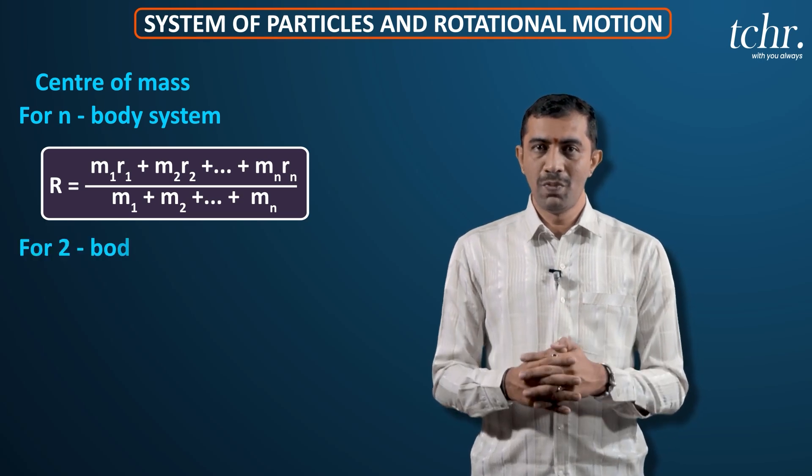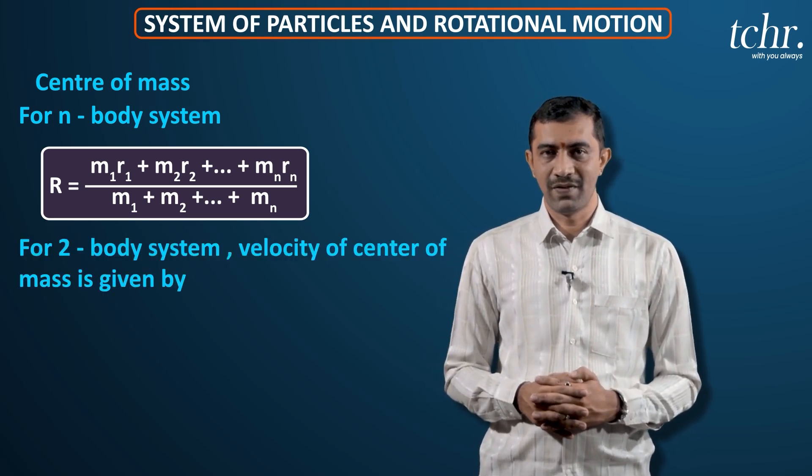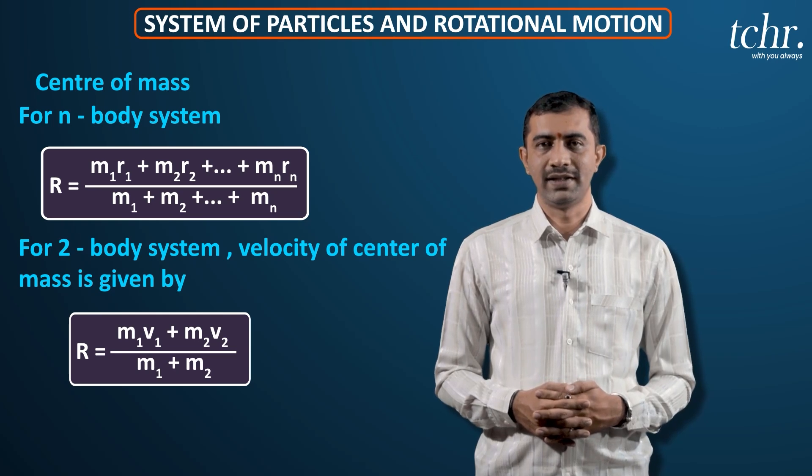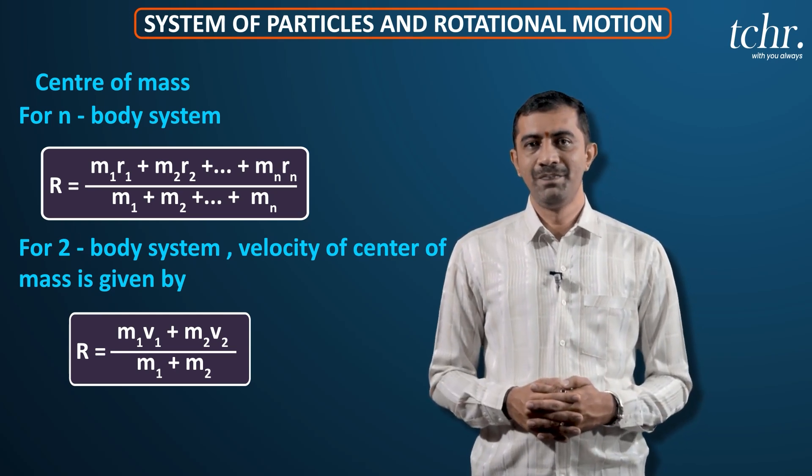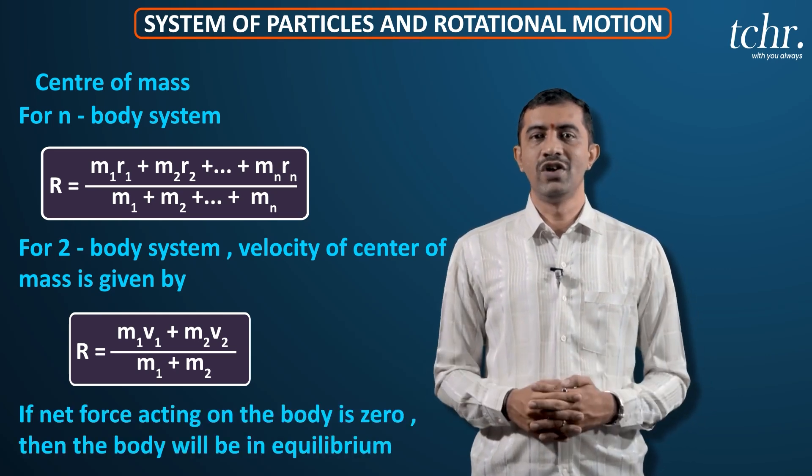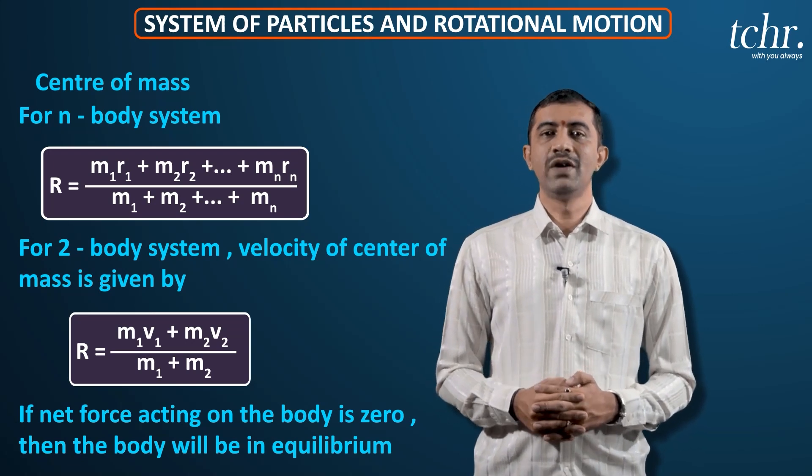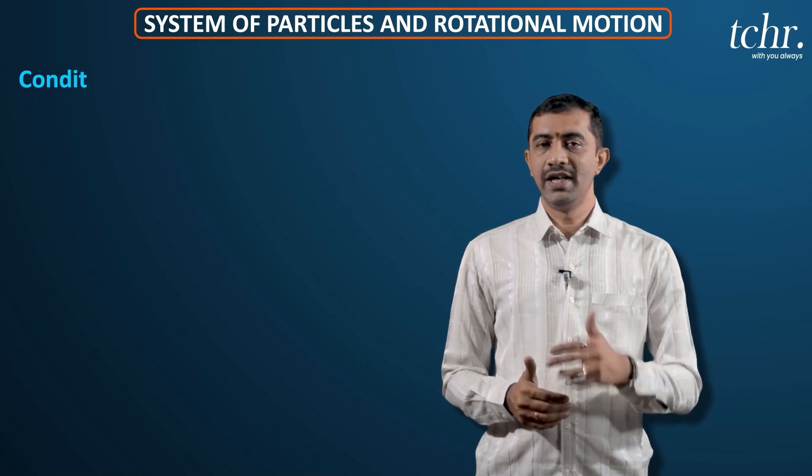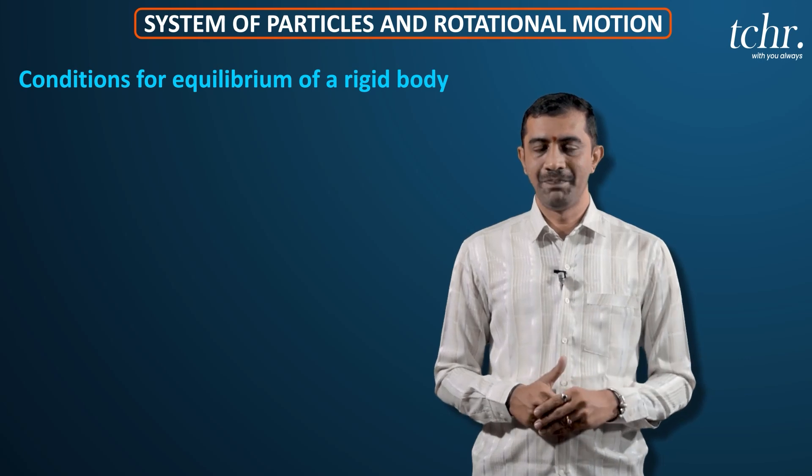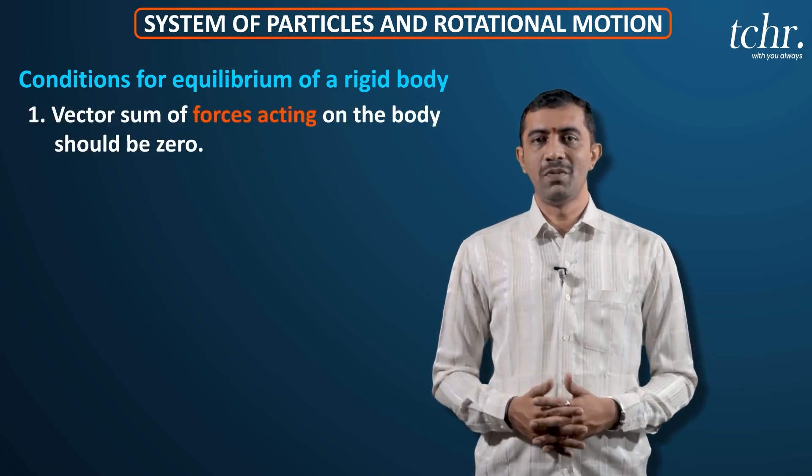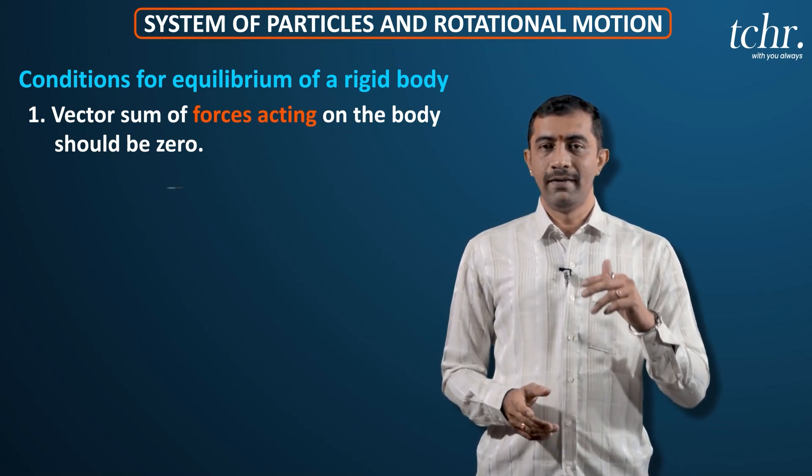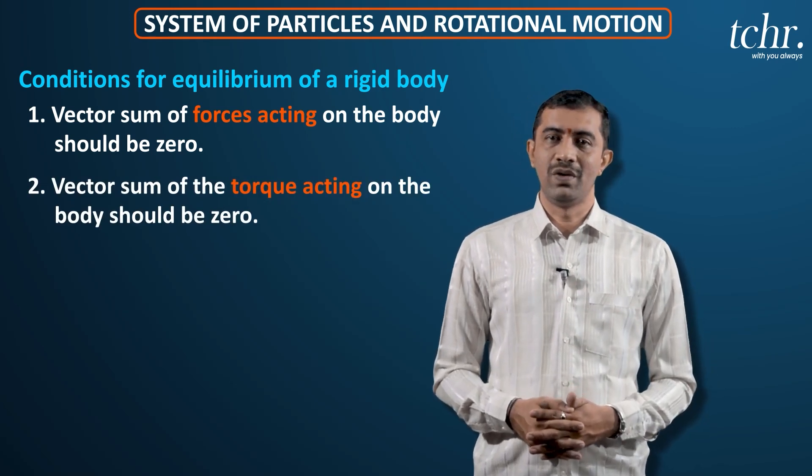So two body system. Velocity of center of mass is given by M1V1 plus M2V2 divided by M1 plus M2. Acceleration is given by M1A1 plus M2A2. M into A will be force. So net force acting on the body zero. Body equilibrium. What are the conditions for equilibrium of a rigid body? Net force acting on the body, vector sum of the forces acting on the body should be zero.